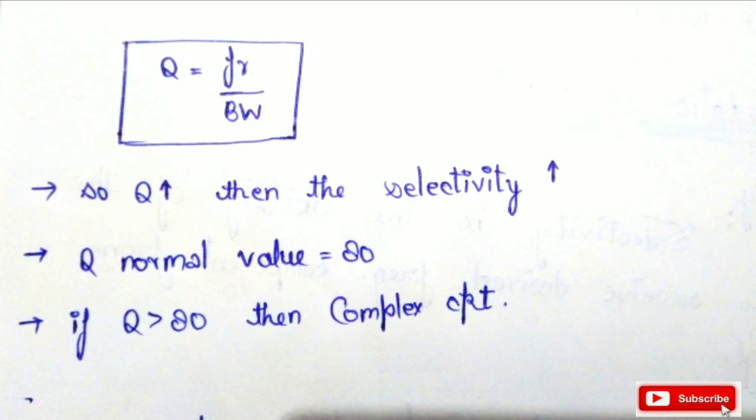So when the Q value is high, selectivity is high. However, it doesn't mean we can choose any arbitrarily high quality factor value, because a very high Q value results in a complex circuit. For normal functioning, we choose a Q value of 18.